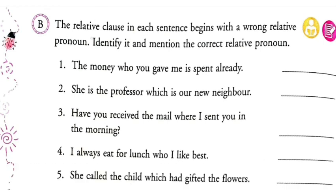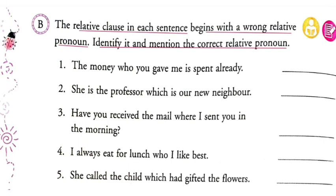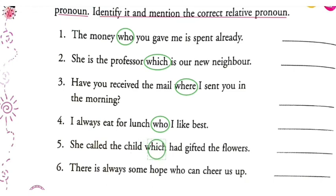Next exercise: the relative clause in each sentence begins with the wrong relative pronoun — identify it and write the correct one. Looking at the sentences, the incorrect pronouns used are: 'who' in the first, 'which' in the second, 'where' in the third, then 'who' and 'which' in further ones. All of these need to be changed to the proper relative pronoun.